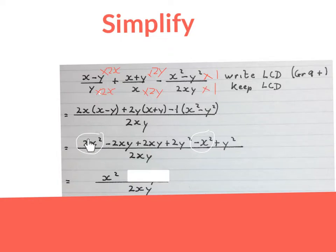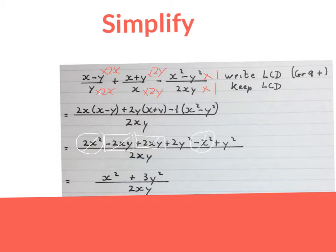We further simplify the top and keep the LCD. The plus 2x squared minus x squared gives x squared. The minus 2xy plus 2xy cancel each other. The plus 2y squared plus y squared gives plus 3y squared. This is the fully simplified version of this expression. Please stop the video and get your brain around this.